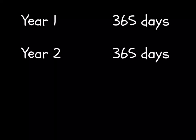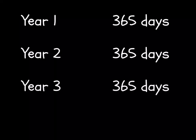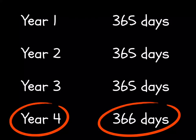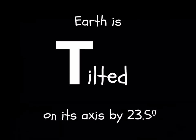But because we can't have a quarter of a day, we have a cycle of three years of 365 days and a fourth year with 366 days. This is known as a leap year, and the extra day is on February 29th.